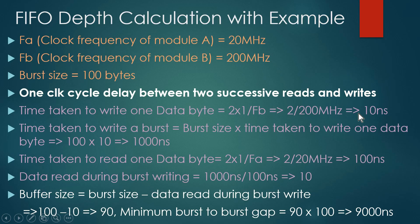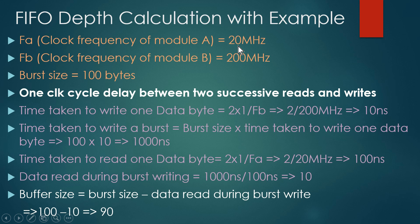Let us see an example. The frequency of module A is 20 MHz, the frequency of module B is 200 MHz, and the burst size is 100 bytes. Additionally, there is one clock cycle delay between two successive reads and writes. This is the complexity added to our problem statement.